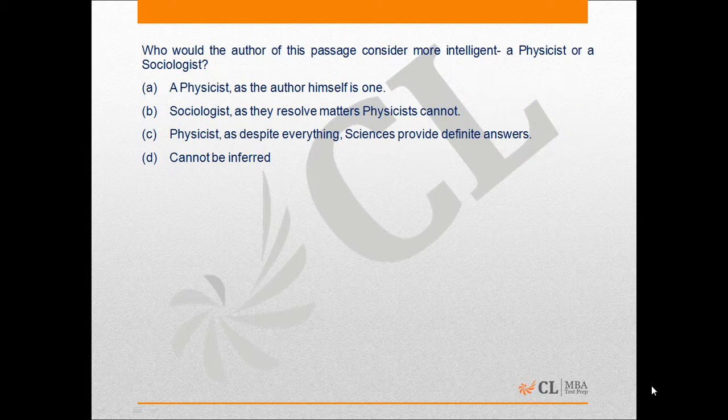Next question says, who would the author of this passage consider more intelligent, a physicist or a sociologist? Now, all the questions that are—when questions get complex, physicists pass it on to chemists, and chemists pass it on to biology, and biology to history and history to sociologists. That only means that sociologists would deal with more complex questions than a physicist would.